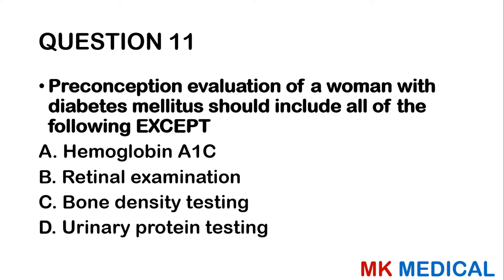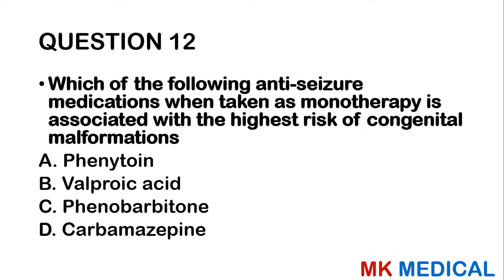Question 12: Which anti-seizure medication, when taken as monotherapy, is associated with the highest risk of congenital malformations? A — phenytoin. B — valproic acid. C — phenobarbital. D — carbamazepine. Anti-epileptic drugs carry significant risk of congenital malformations. The answer is B — valproic acid.